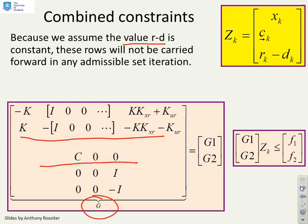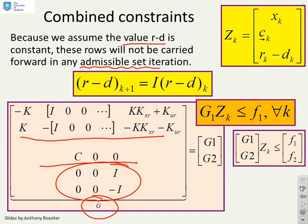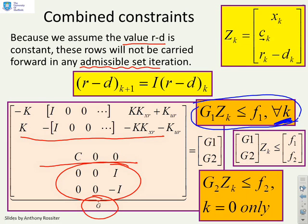Because we assume that the value R-D is constant, these particular rows should not be carried forward in any admissible set iteration, because R-D is not going to tend to zero, it's going to stay at the same value, and that will affect the admissible set algorithm if it's not handled correctly. So that's why we've split this G into G1 and G2. And you'll notice we insist that the G1ZK less than or equal to F1 for all values of K, that one's going to iterate forward. However, G2ZK less than or equal to F2, we only need to do it at K equals 0, because that part of Z, or those constraints, are not going to change as we iterate forward. So there is this subtle change in how we handle the constraints and we need to think about that when we write our admissible set algorithm.